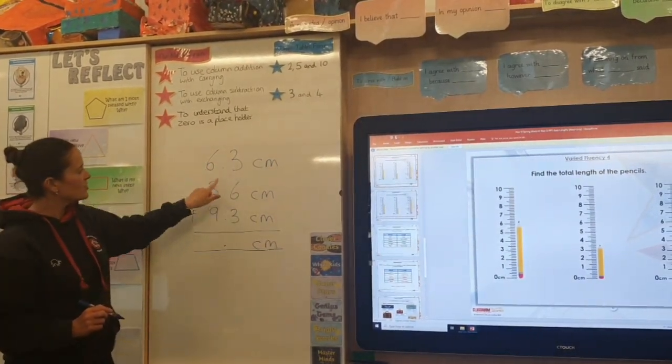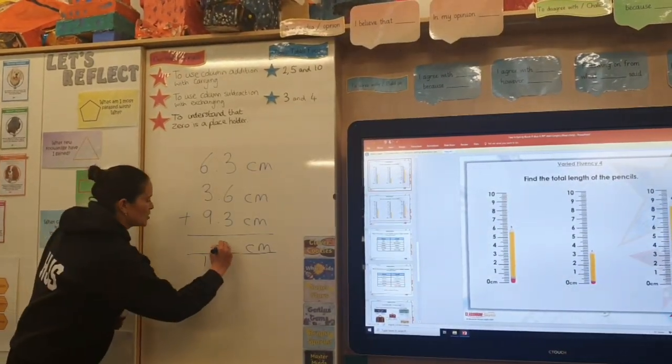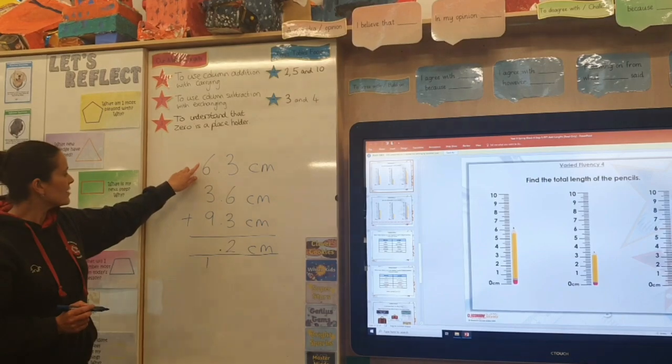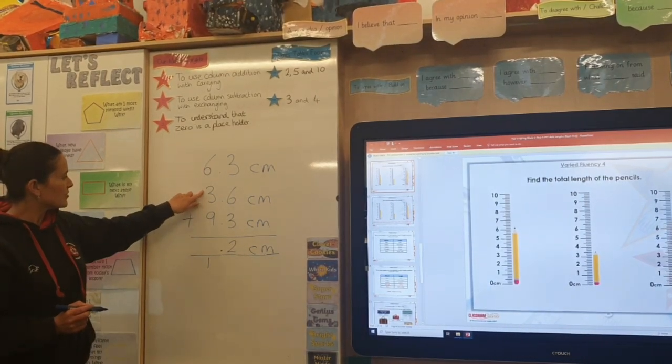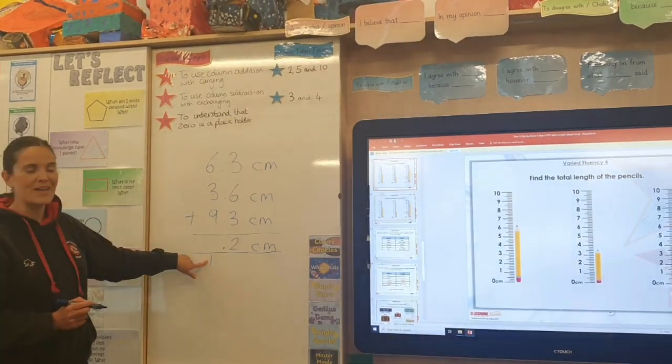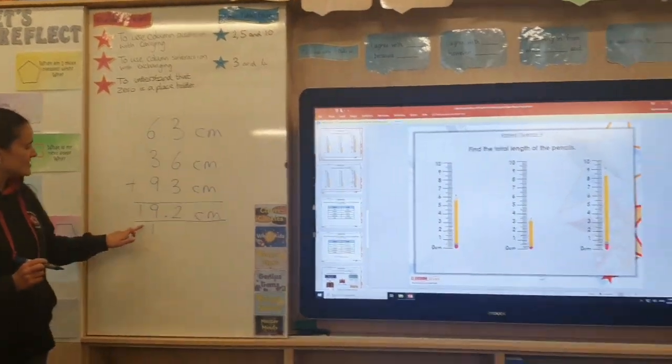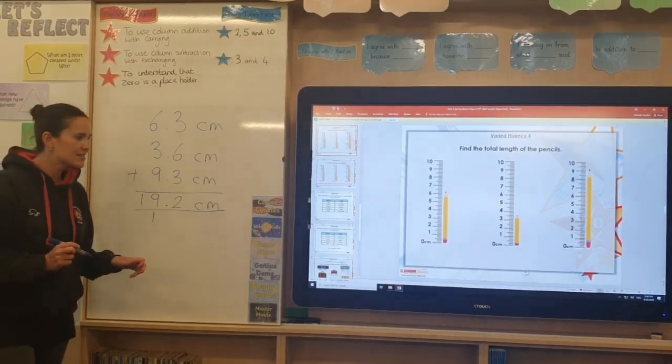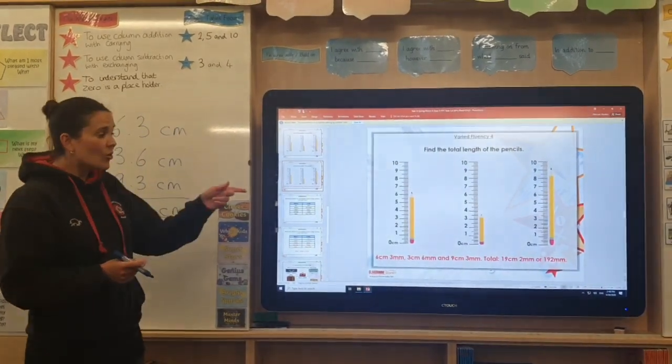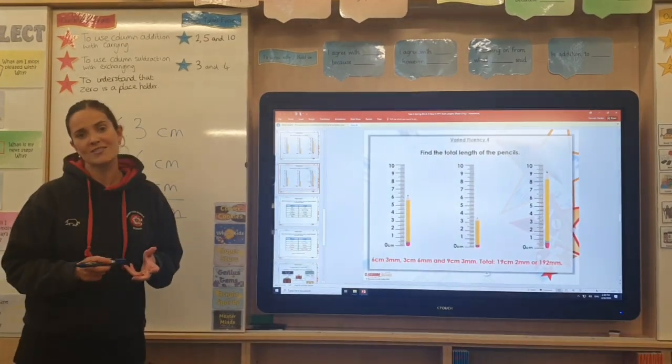And we would add three and six, which is nine. One more three, which is twelve. Which we write in our answer box like that. And then we've got our ones column here, six. And three is nine. And we've got another nine, eighteen. And one there makes nineteen. So the total length of those three pencils is nineteen point two centimetres. Or nineteen whole centimetres and two millimetres. Or you could even have 192 millimetres. Many different ways you can present your answer for that question.